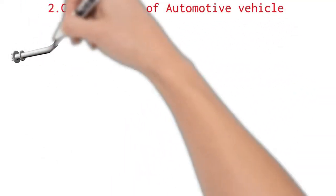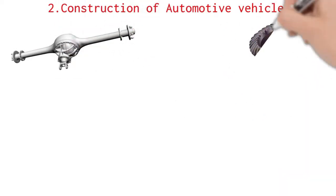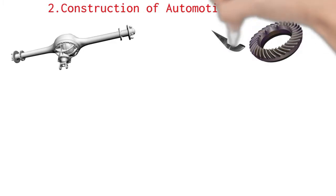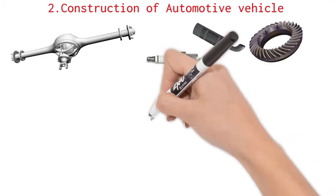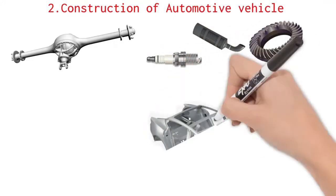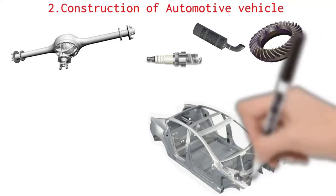An automobile is manufactured by putting large number of components together in forms of systems and subsystems. For example, a single car may have around 28,000 to 30,000 parts if you count every nut, bolt, screw and bearing etc.